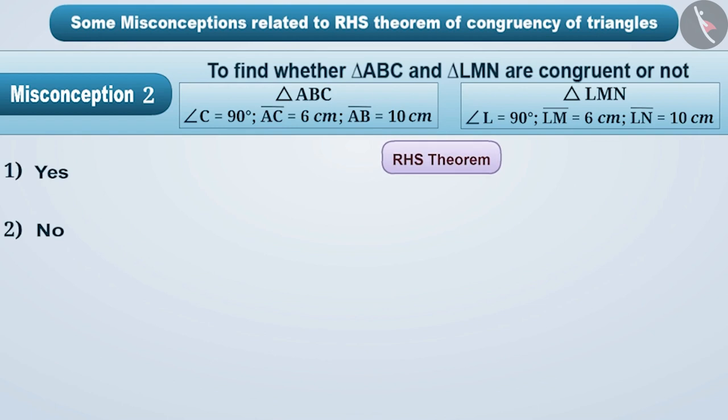Like here, in triangle ABC and triangle LMN, we see that angle C is equal to angle L is equal to 90 degrees. AC is equal to LM is equal to 6 cm, and AB is equal to LN is equal to 10 cm.